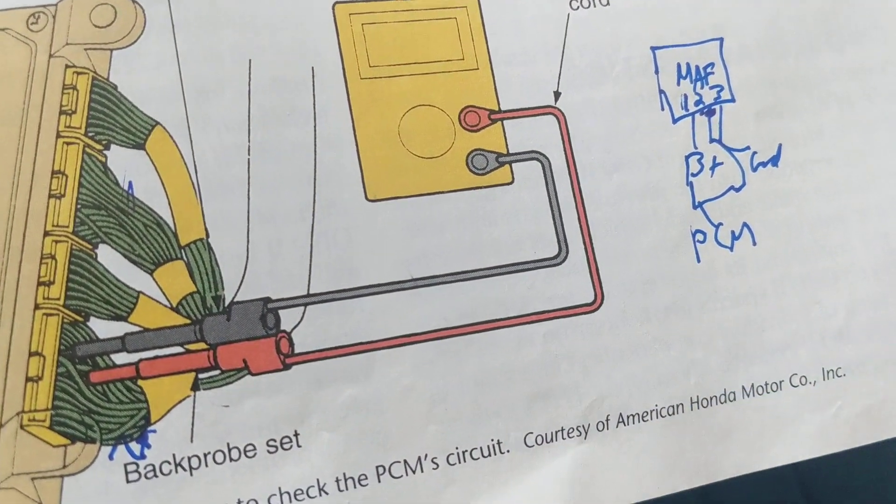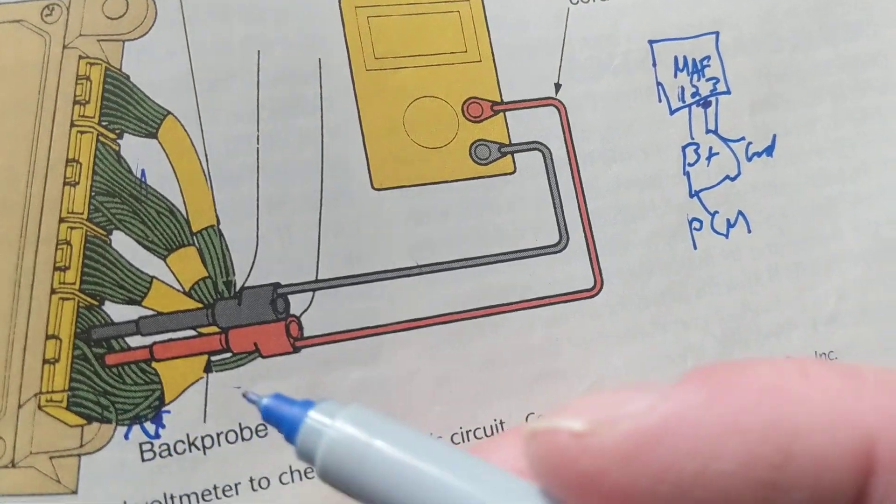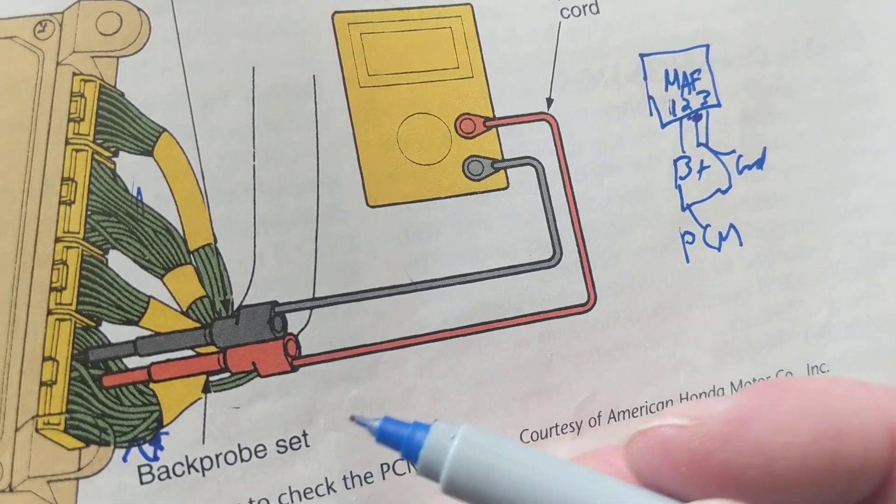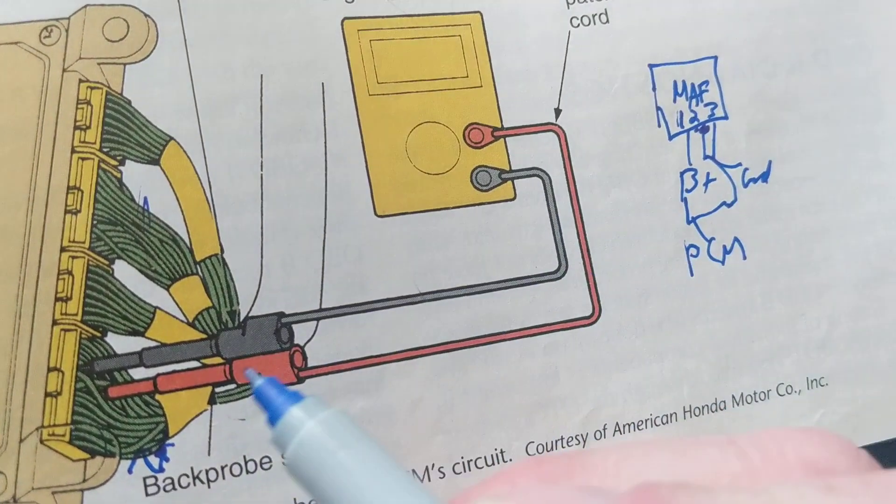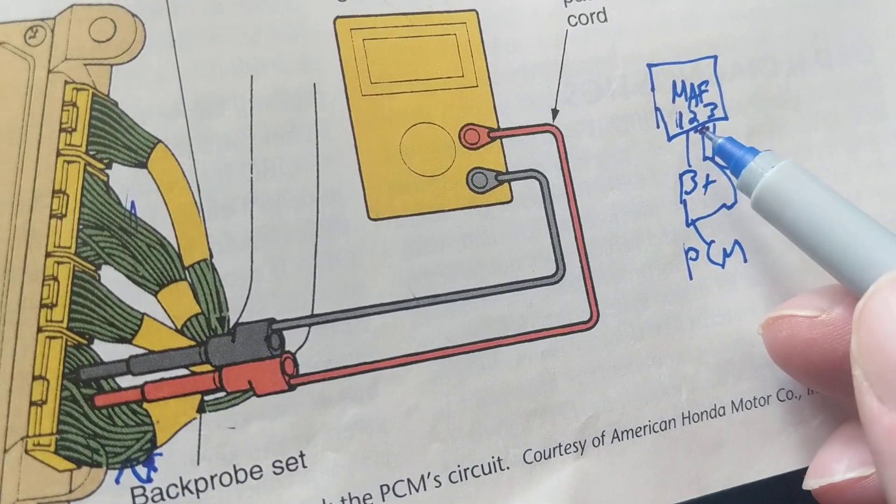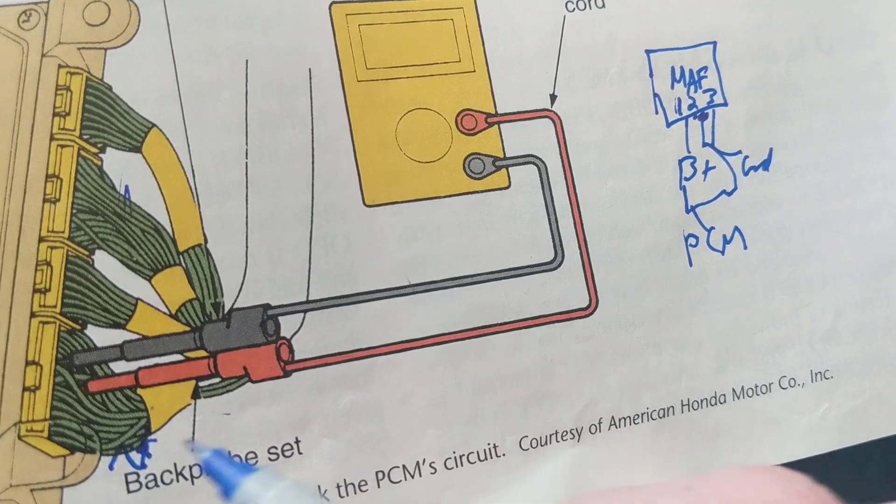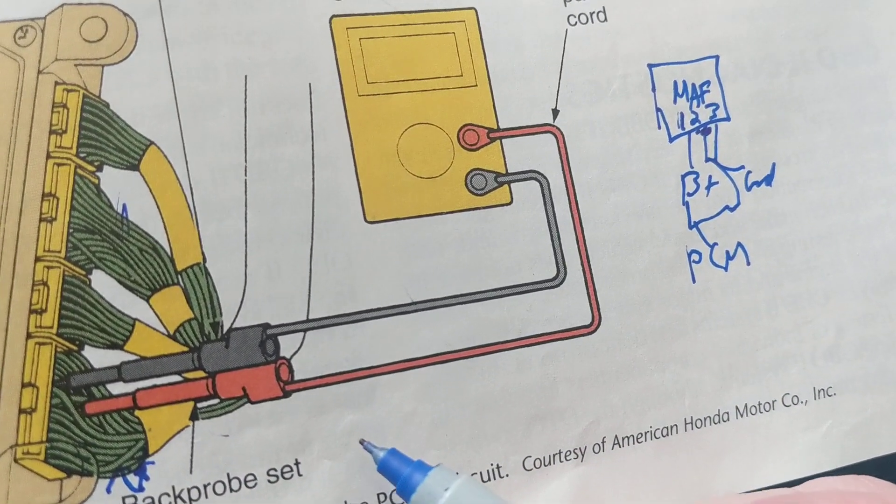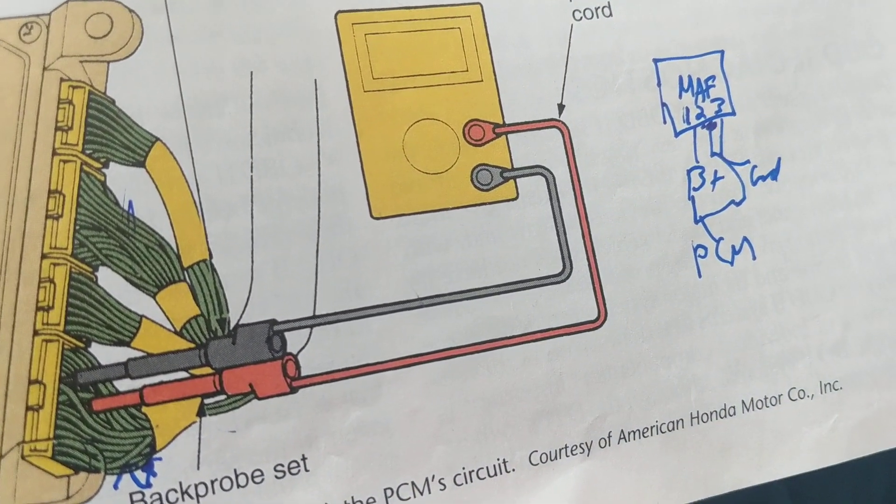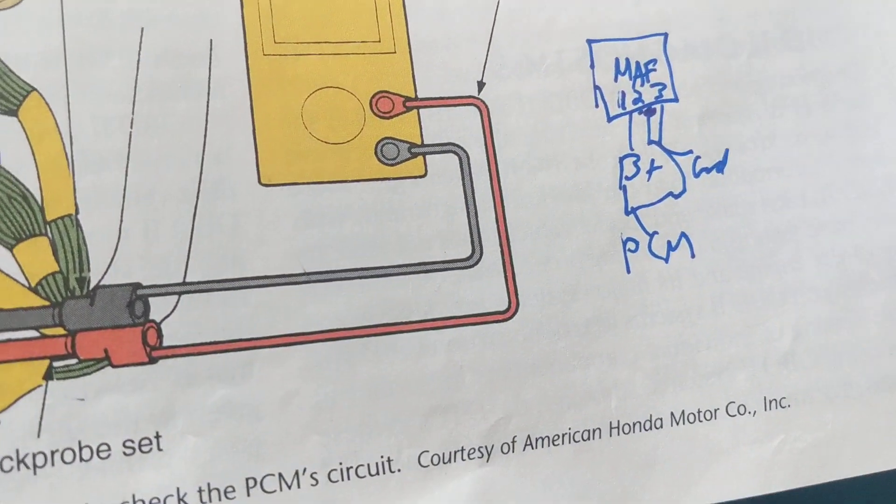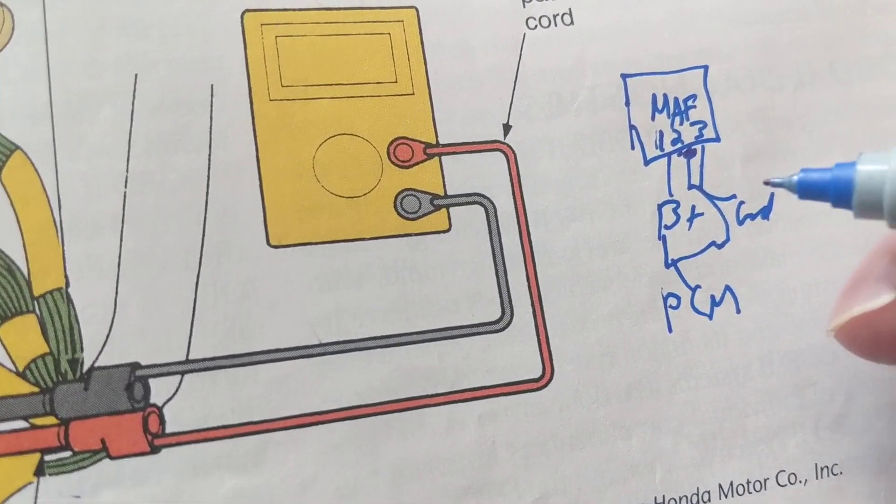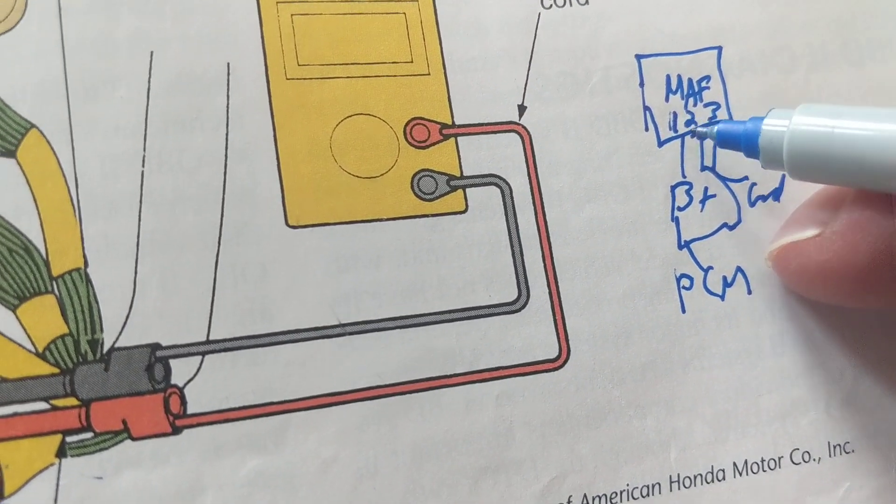If this is open from here till here, which we believe it is, we're not going to have continuity. It's not going to be zero ohms. So you're going to go across from here till here measuring resistance. We should measure zero ohms. That's how you find out how the wire is broken.